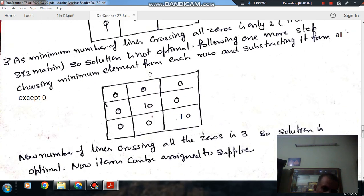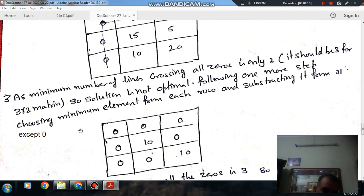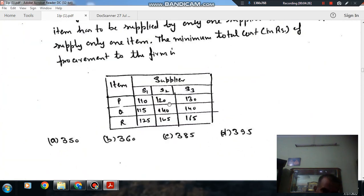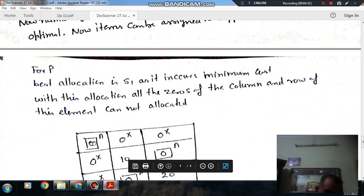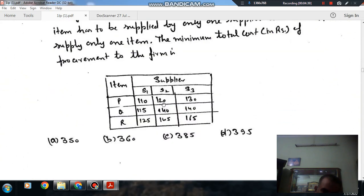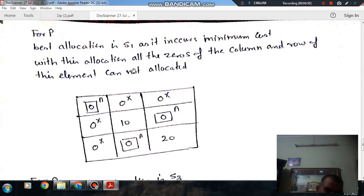Now we can assign. We will assign the item to the supplier where 0s are available. Starting with P, here we can see that out of these 3, the minimum cost is for P to S1, that is 110. So we will allocate this as assignment. And so if P is supplying to S1, then it will not supply to S2 and S3. And if S1 is getting from P, so it will not get items from Q and R. So these allocations will not be allocated.